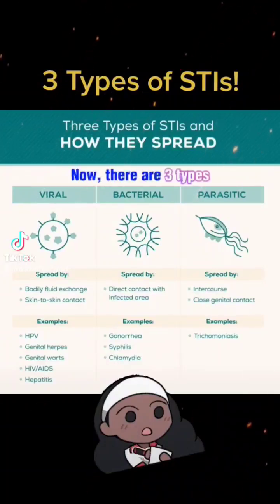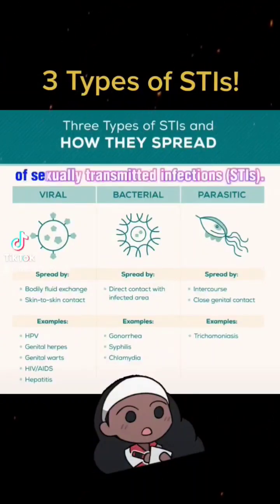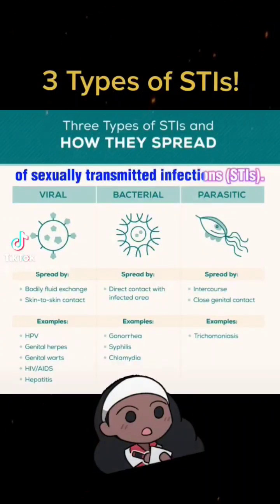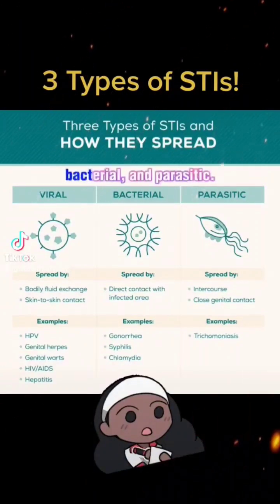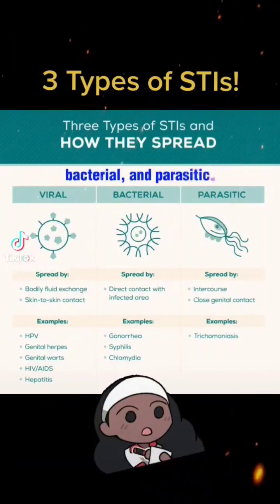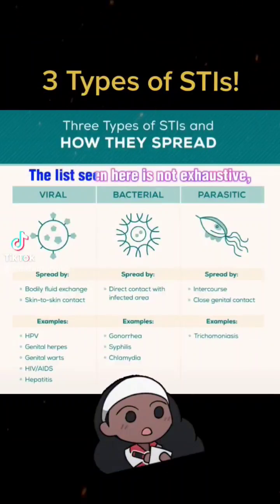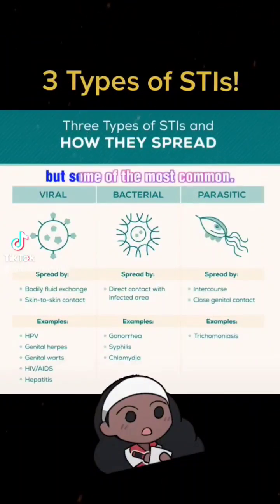There are three types of sexually transmitted infections, STIs: viral, bacterial, and parasitic. The list seen here is not exhaustive, but covers some of the most common.